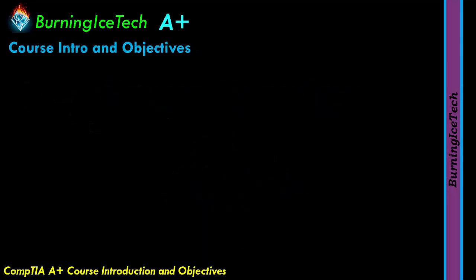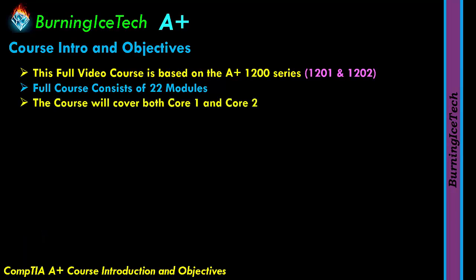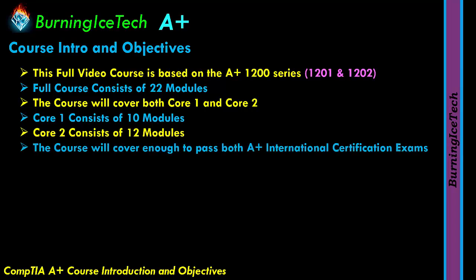As for the course overview and objectives, this full video course is based on the A+ 1200 series — the 1201 and 1202. The full course consists of a total of 22 modules, with a dedicated video for each. Core one consists of 10 modules and core two consists of 12 modules. Modules one through ten are core one, and modules eleven through twenty-two are core two.